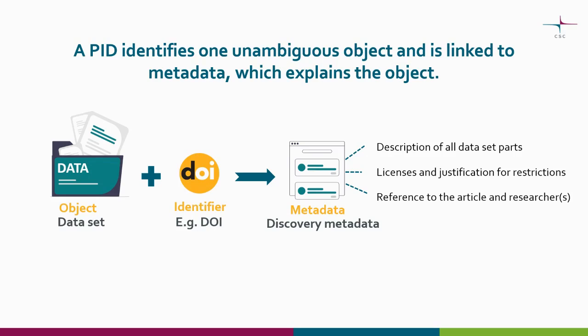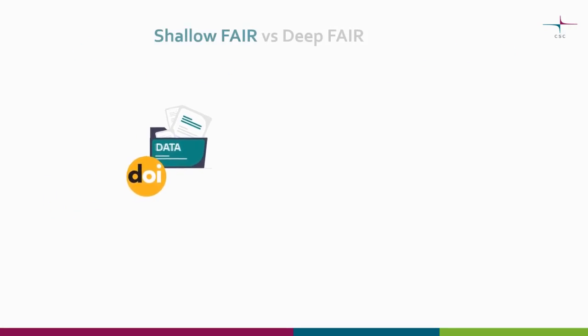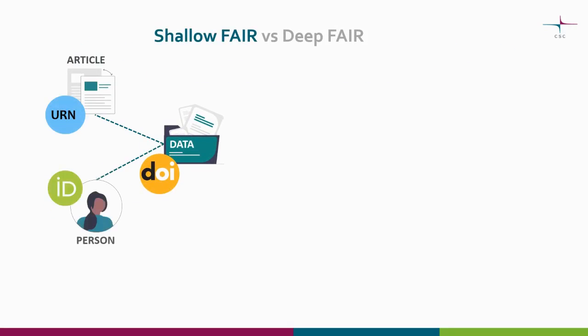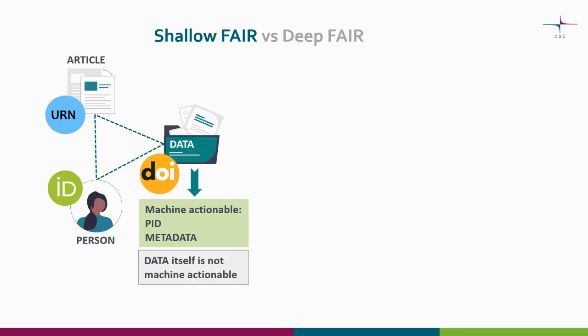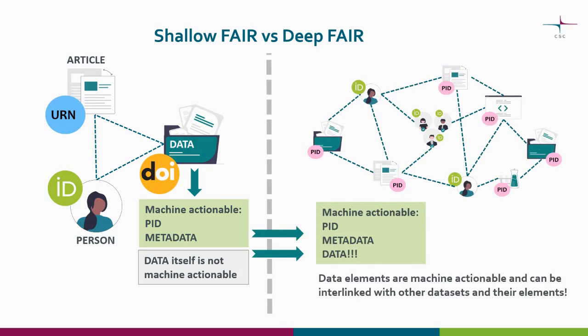Remember that the PID itself does not guarantee the quality of the object — anyone can for example get a DOI from Zenodo for their files. In shallow FAIR, the minimum requirement is that a published dataset has machine actionable metadata and a PID, and the creators should be unambiguously identifiable with a PID to give credit to the correct person. A researcher can for example be identified with ORCID and articles can be given a DOI or URN. In deep FAIR, as many as possible of the data elements are machine actionable and can be interlinked directly with similar datasets and their elements.